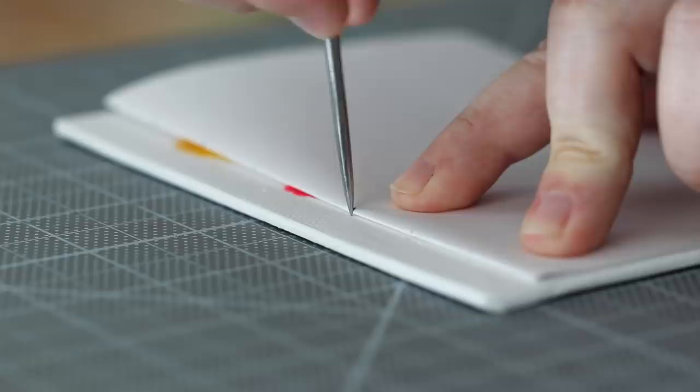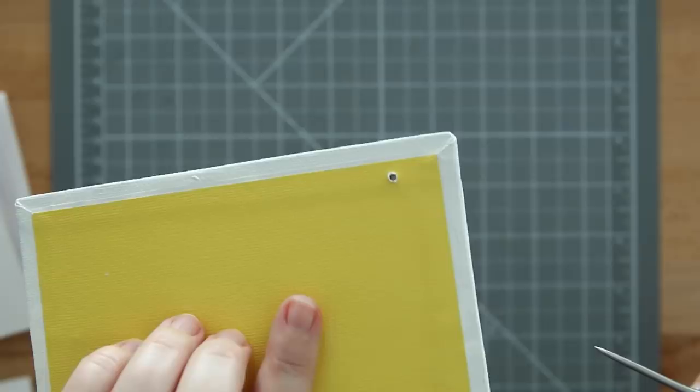I first made small marks with an awl, and then picked up the canvas so I could pierce it all the way through, making sure there's enough space for the binding needle. This canvas board is pretty tough, so it took me a while to pierce through all of them.